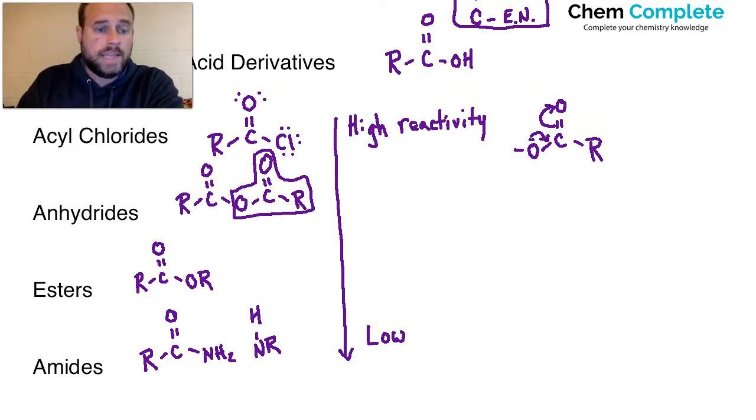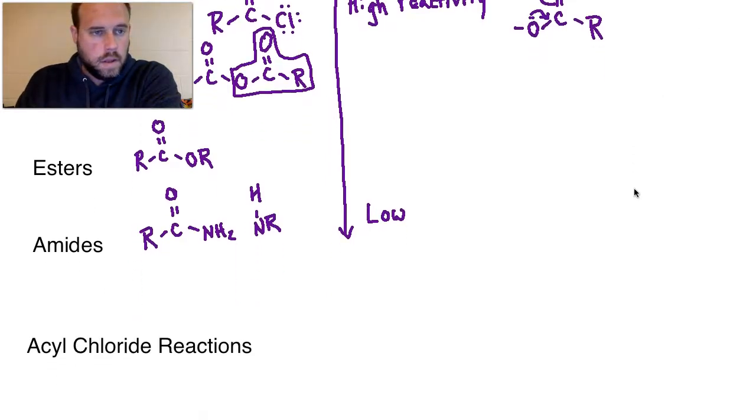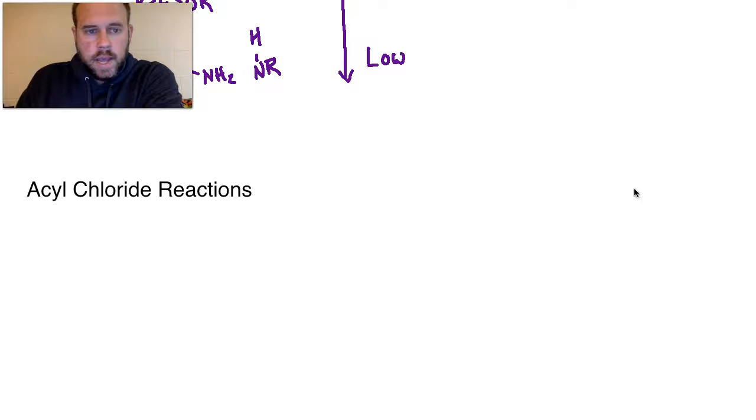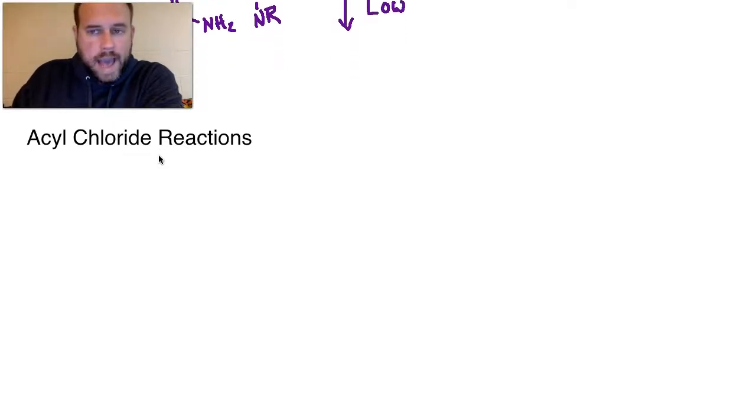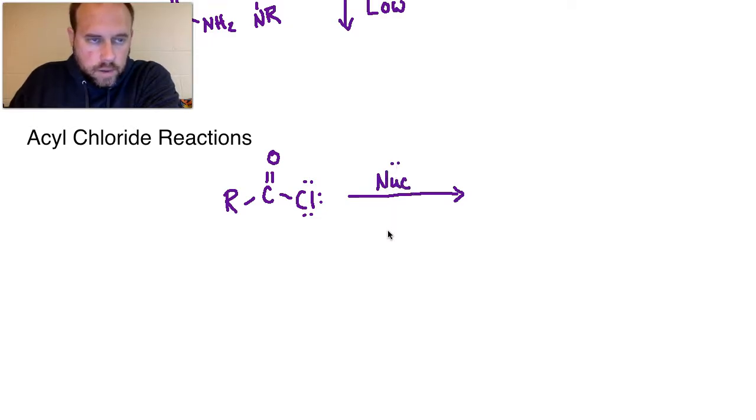So the next thing we're going to take a look at then is the acyl chloride reactions. So for acyl chloride reactions, let's just generally outline what's going to be happening here mechanistically, and then we can go through and actually talk about the individual reactions. So for acyl chlorides, you're going to have an R-C double bond O, and then you'll have the Cl on the other side. Now when you've got this set up here, you're going to usually expose the acyl chloride to something that is nucleophilic.